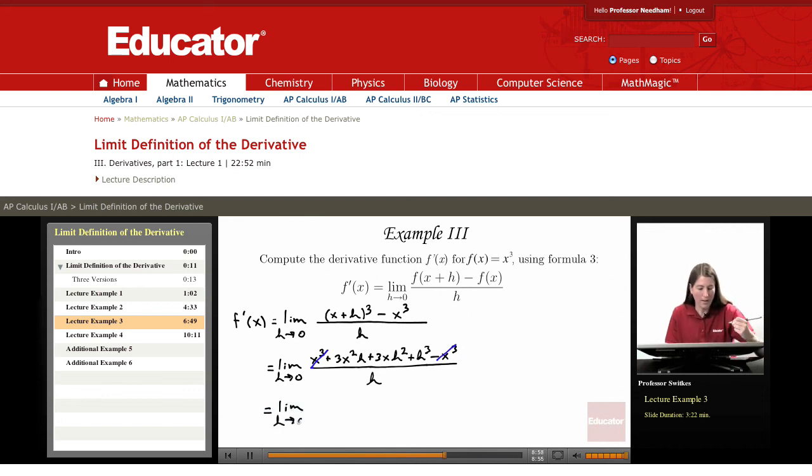And another way to say that is that I'm going to factor out an h from the numerator and then cancel with the denominator h. So 3 x squared h over h becomes 3 x squared.